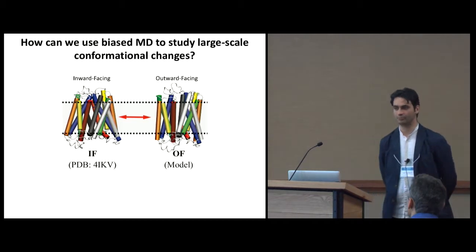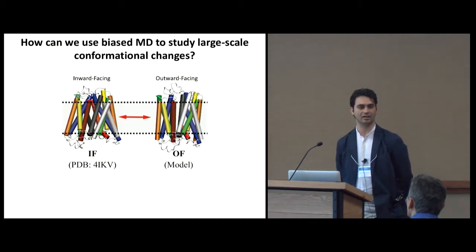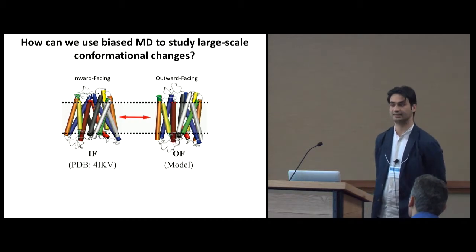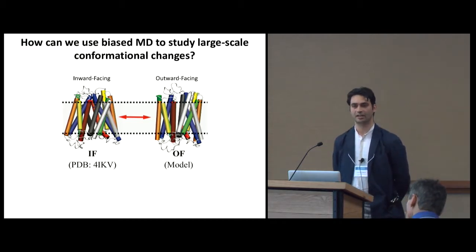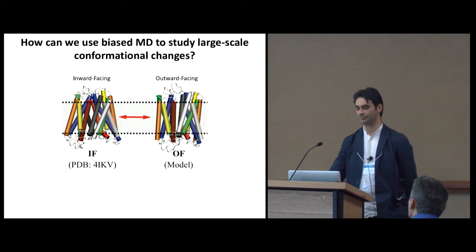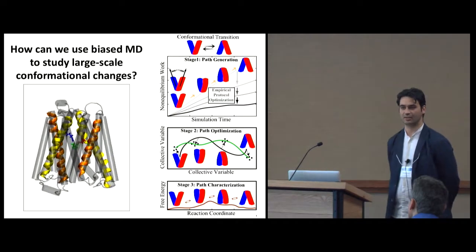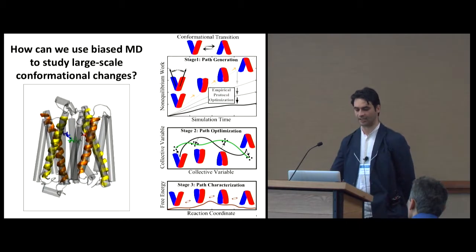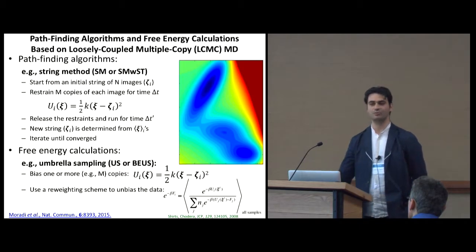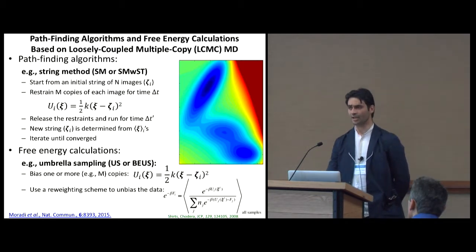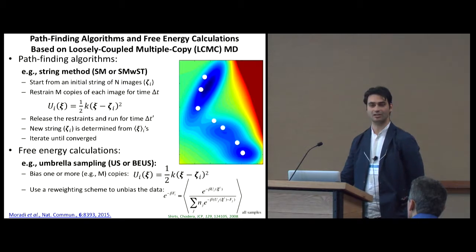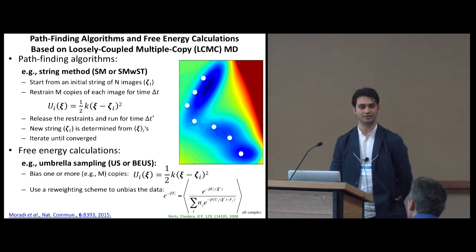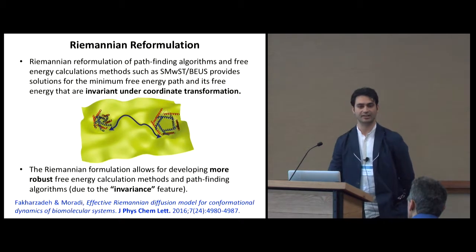The methodology involves different types of biasing. Briefly, it involves path optimization and path-finding algorithms like the string method, which tries to find a minimum free energy pathway, followed by free energy calculations along that pathway.